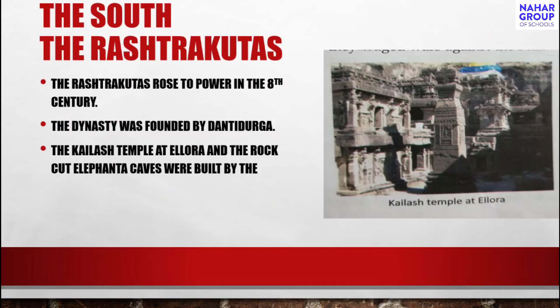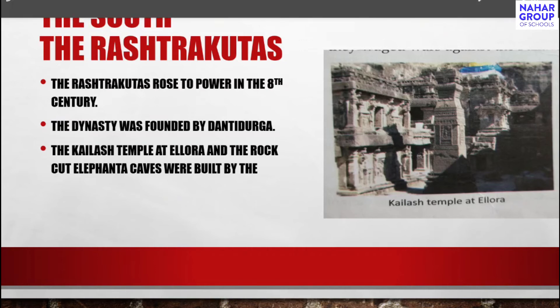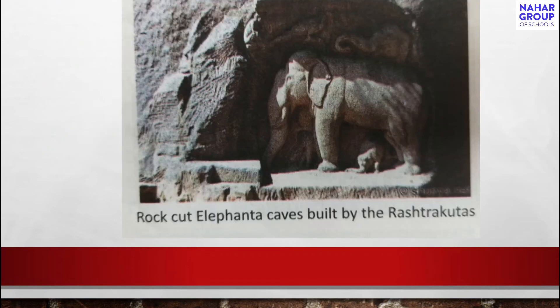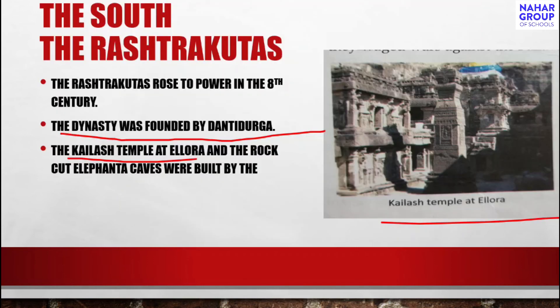In the south, the Rashtrakuta dynasty rose to power in the 8th century. The dynasty was founded by Dantidurga. The Kailash temple in Ellora and the rock-cut Elephanta caves were built by the Rashtrakutas.